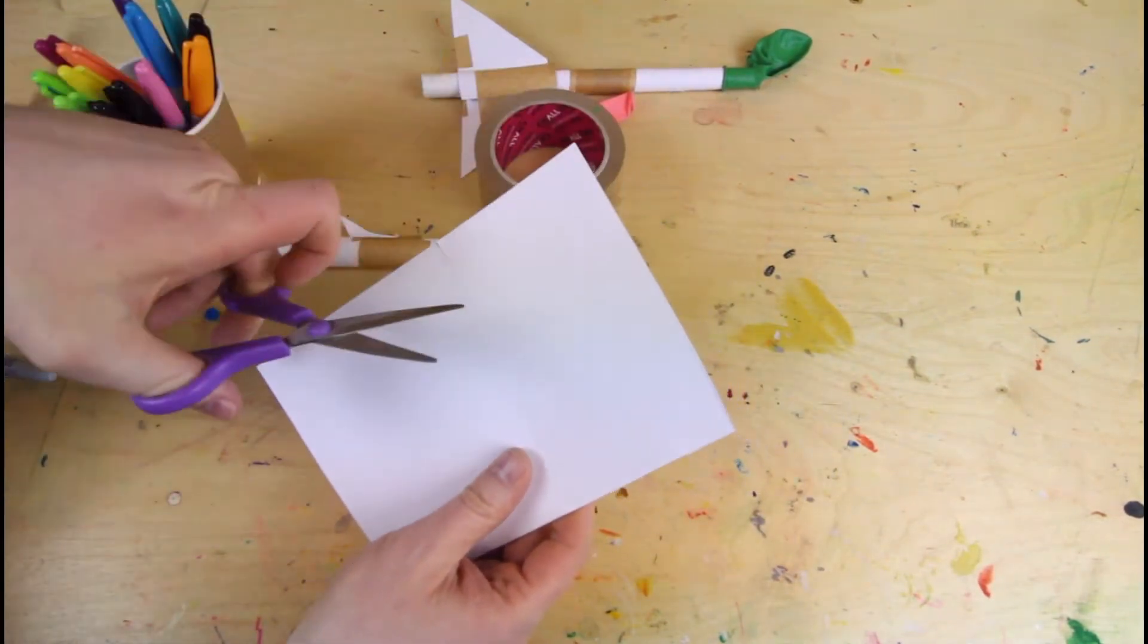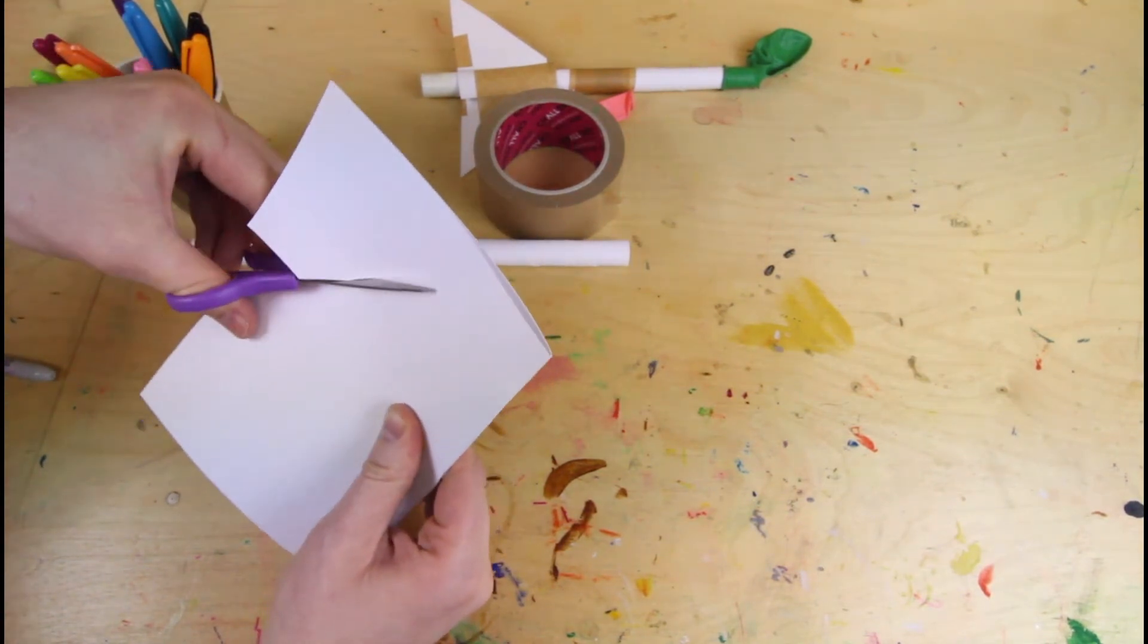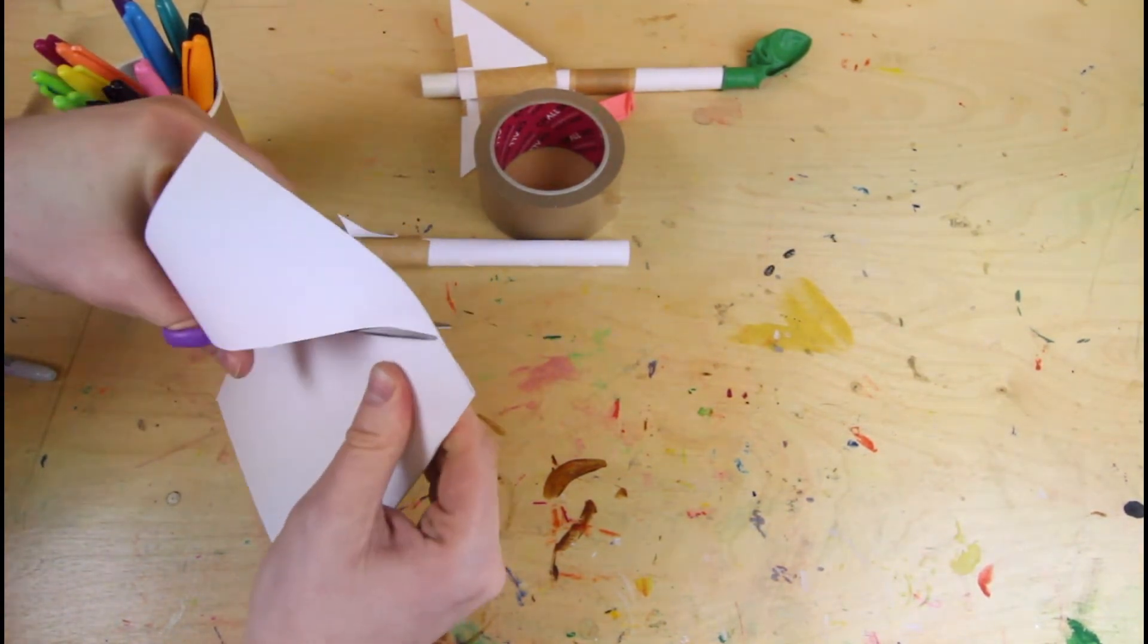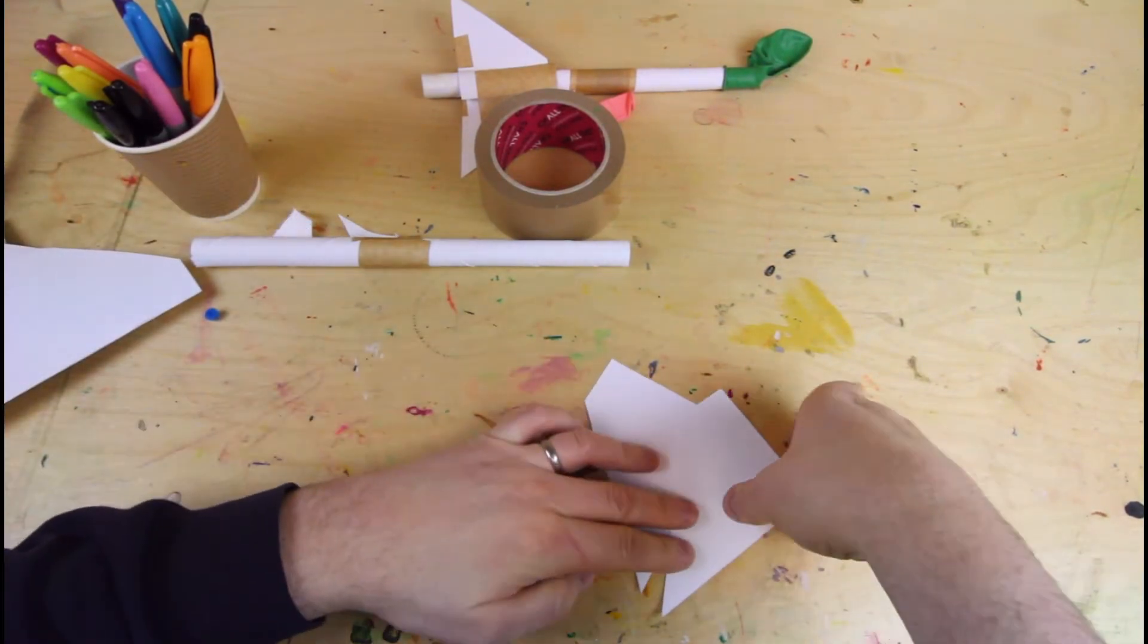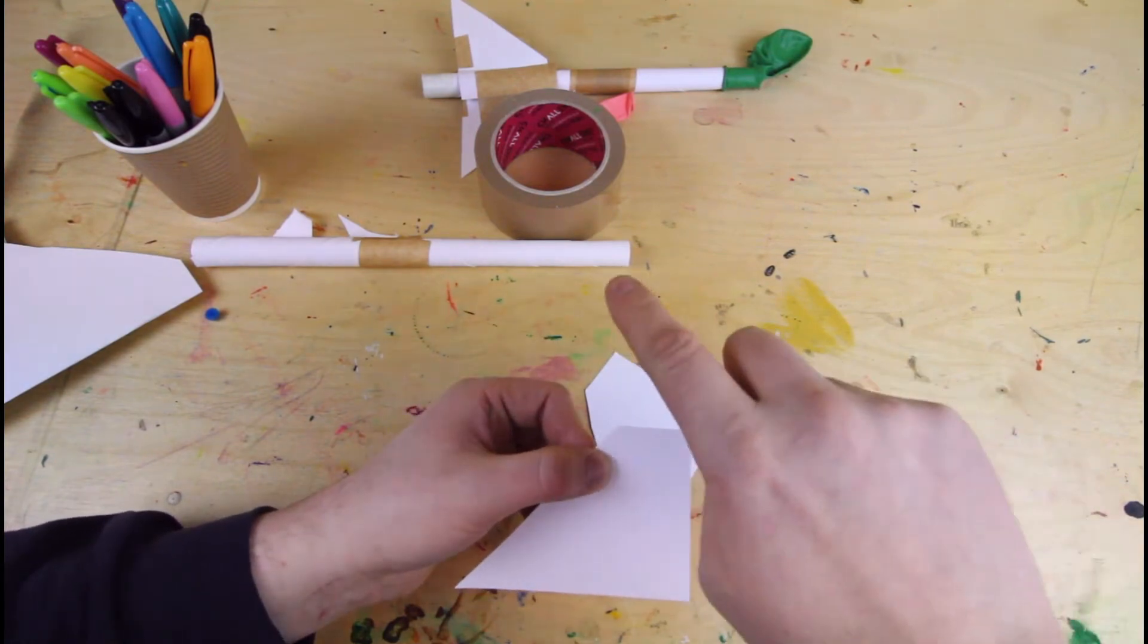So leave a little tab, I'll show you now, when you cut them off. So like so, it's not quite a triangle. So there's a little bit left over. That's the bit that you're going to stick to the tube.